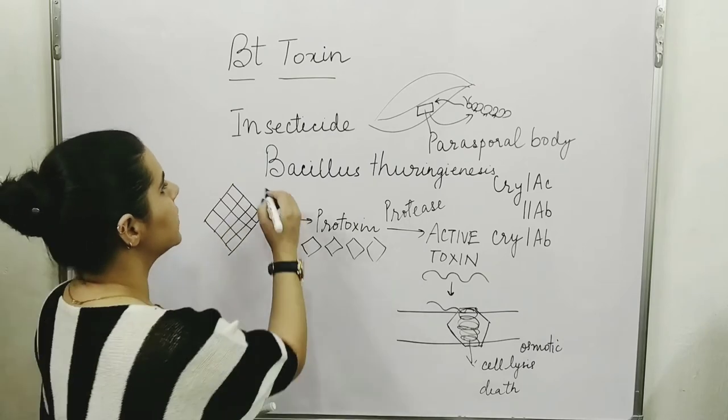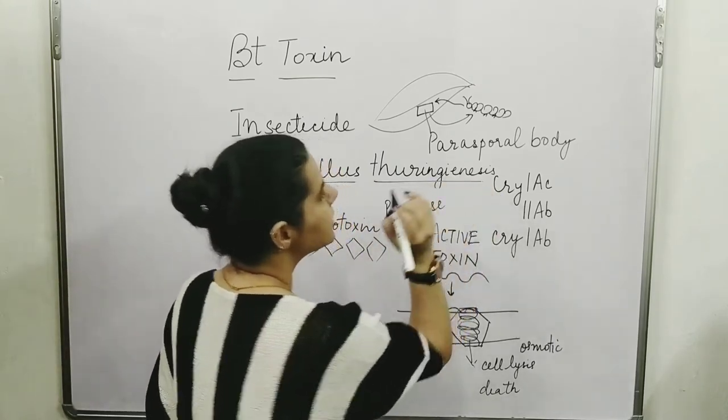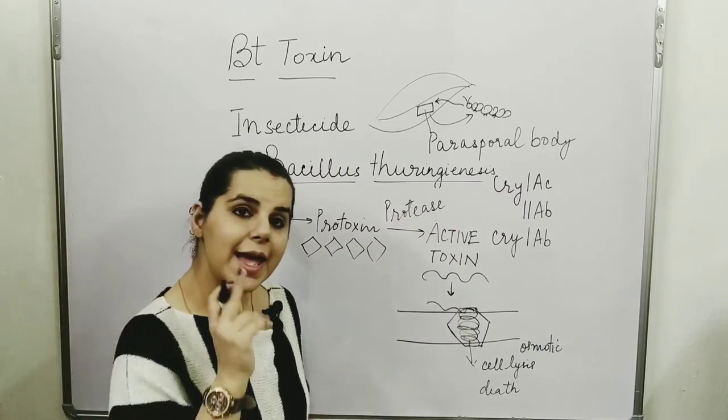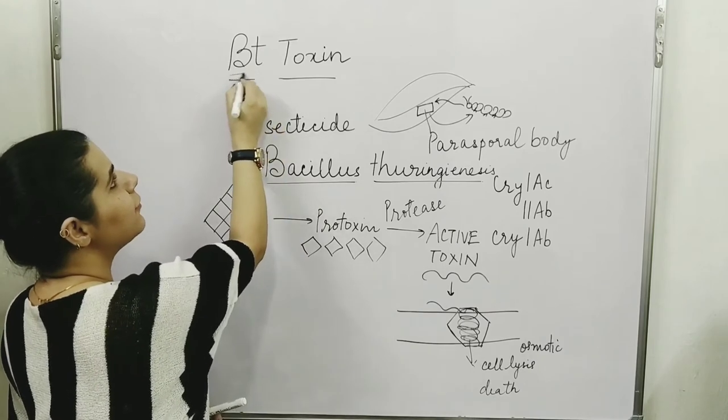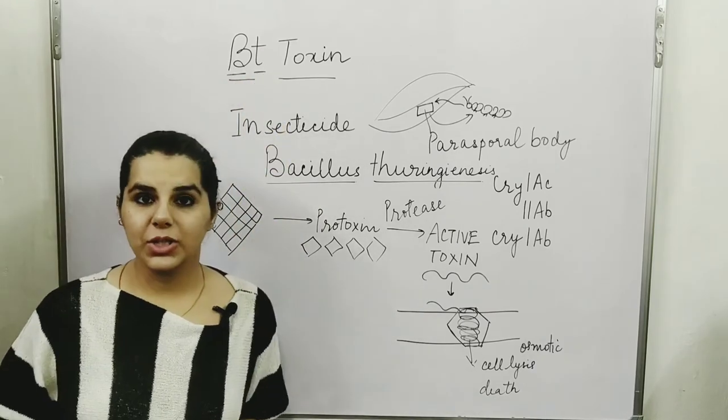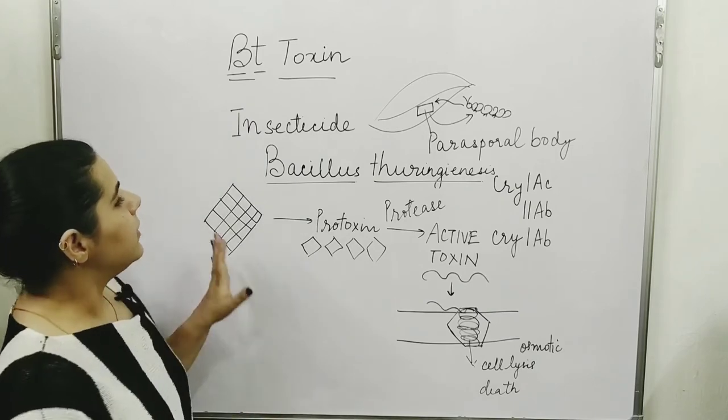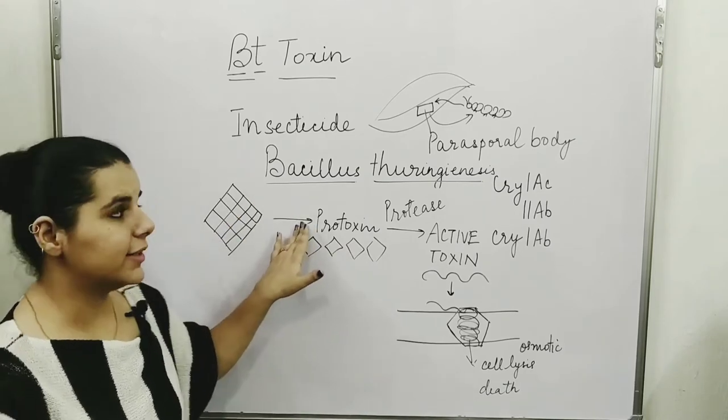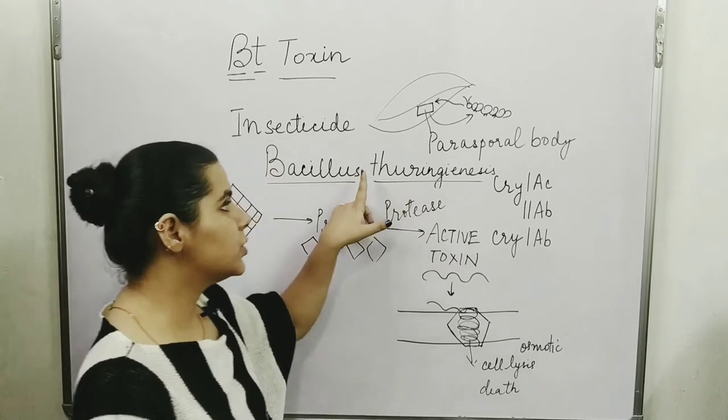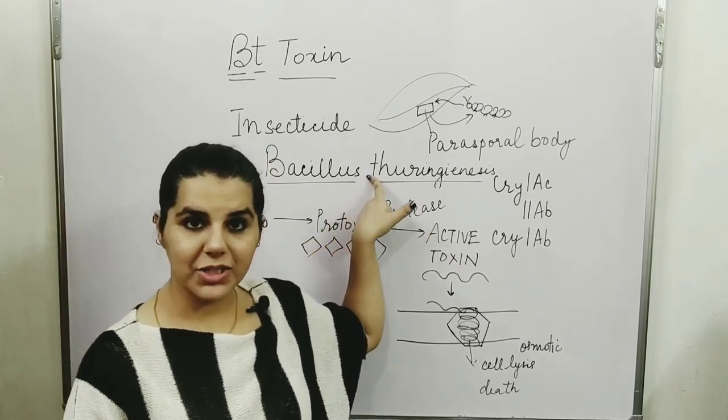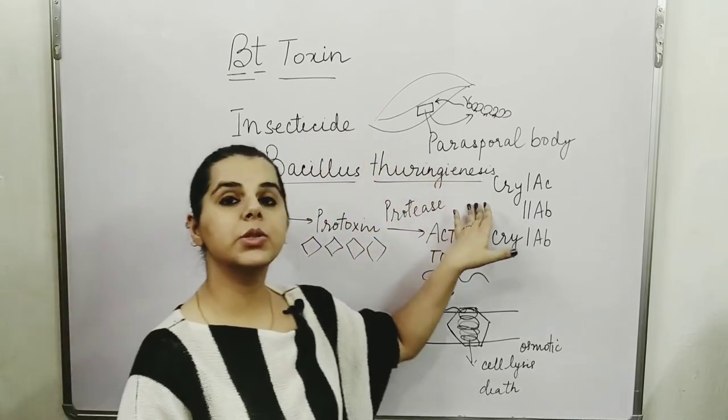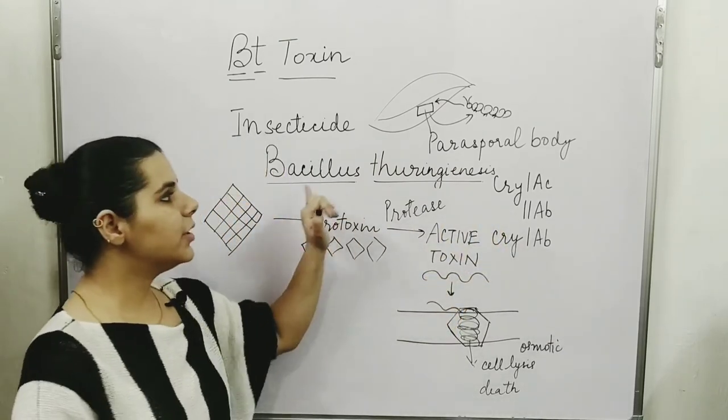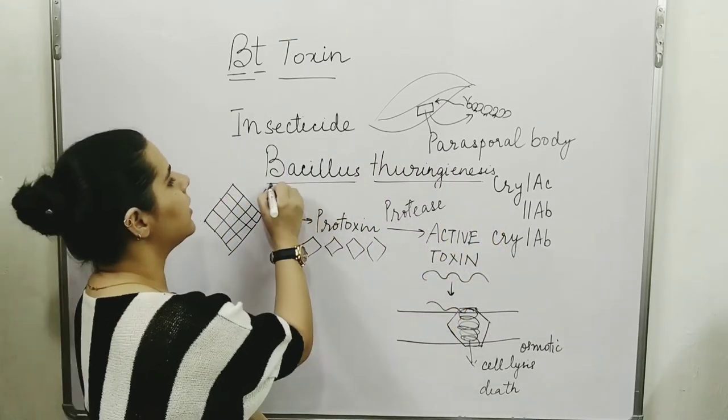This bacteria is responsible for the BT toxin, hence the name BT - B for Bacillus and T for thuringiensis. When we write the name of the genus, the first letter is capital. And when we write the name of the species, the first letter is small.